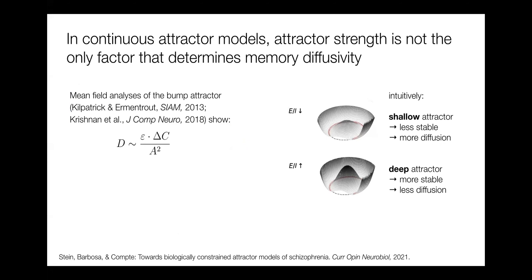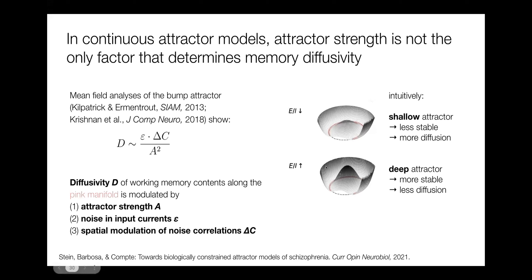What we found was that there are more factors to the stability of working memories in continuous attractor models than just the attractor strength. Zach Kilpatrick and colleagues performed mean field analyses and found that the diffusivity of the working memory along different values representing different memories is modulated first by the attractor strength — which is what we would have intuitively thought — but also by the amount of noise in the input currents, and finally by the spatial modulation of noise correlations. This means we look at how strongly the noise is correlated between a neuron representing the memory item and other neurons in the network that are farther away from the responsive neurons.